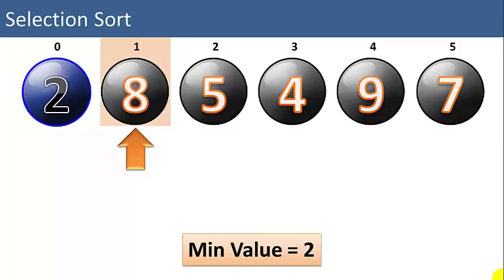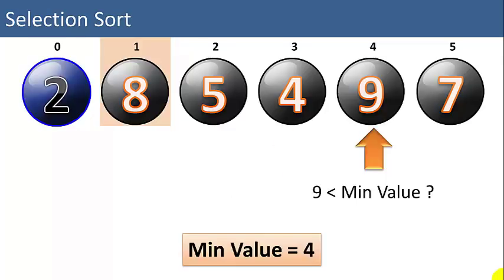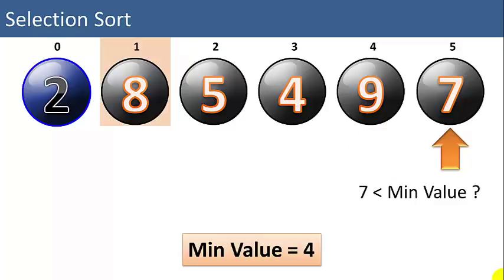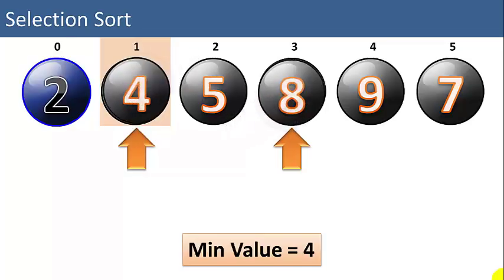Our second iteration is going to start with the 8, so we're going to set min value equal to 8. Is 5 less than min value? Yes, so we set min value to 5. Is 4 less than min value? Yes, so we set min value to 4. Is 9 less than min value? No. Is 7 less than min value? No. So our smallest item in the remaining list is 4. We're going to swap the 4 with the first unsorted item, which is 8. Now the 4 is marked as sorted. The 2 and the 4 are the first and second smallest items in the list, so we have 2 sorted items and 4 unsorted items.